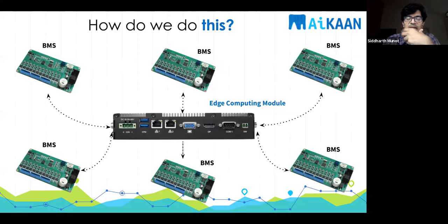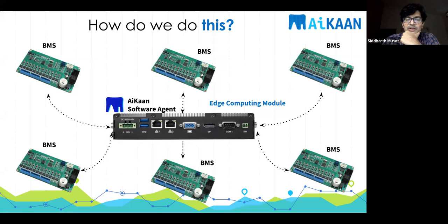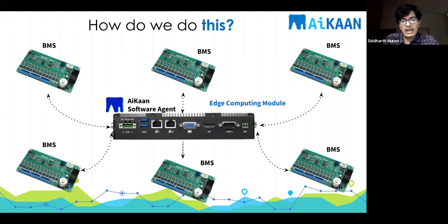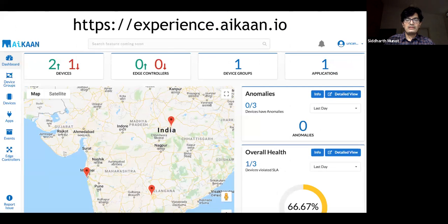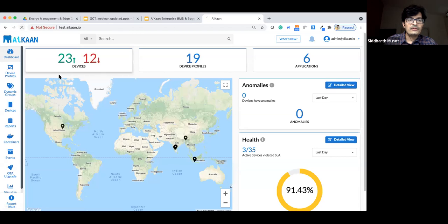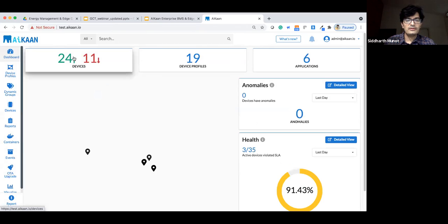ICANN works by deploying a software agent on edge computing modules running Linux or open Android. Once deployed, the agent allows you to control edge devices from the cloud, manage the network, manage applications, and remotely debug problems. The demo platform at experience.icann.io shows a dashboard where, out of 35 devices, you can see how many are connected, how many are down, and view device locations and profiles — which can be organized by geography, end customer, or application.